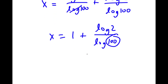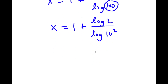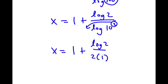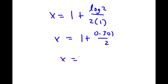Now 100 is the same thing as 10 squared. So now I have x is equal to 1 plus log 2 over log of 10 squared. And remember, if I have something in the form log a to the power of b, I can move that to the front. So now I have x is equal to 1 plus log 2 over 2 times log 10, which is simply 1. And log 2 equals 0.301 over 2, which is equal to 1 plus 0.1505, which equals 1.1505.